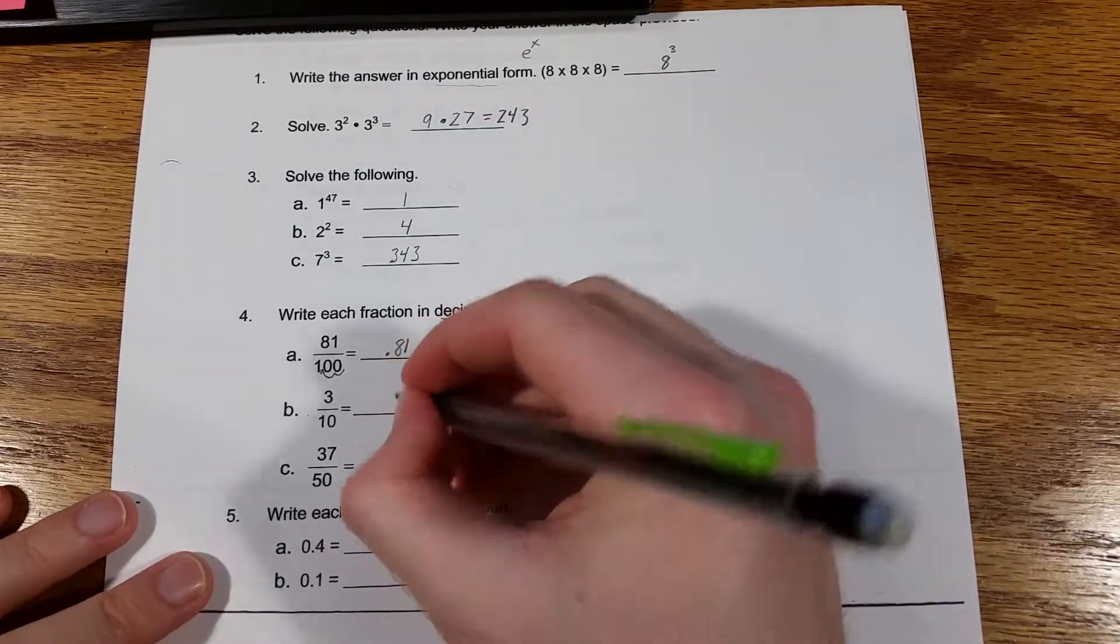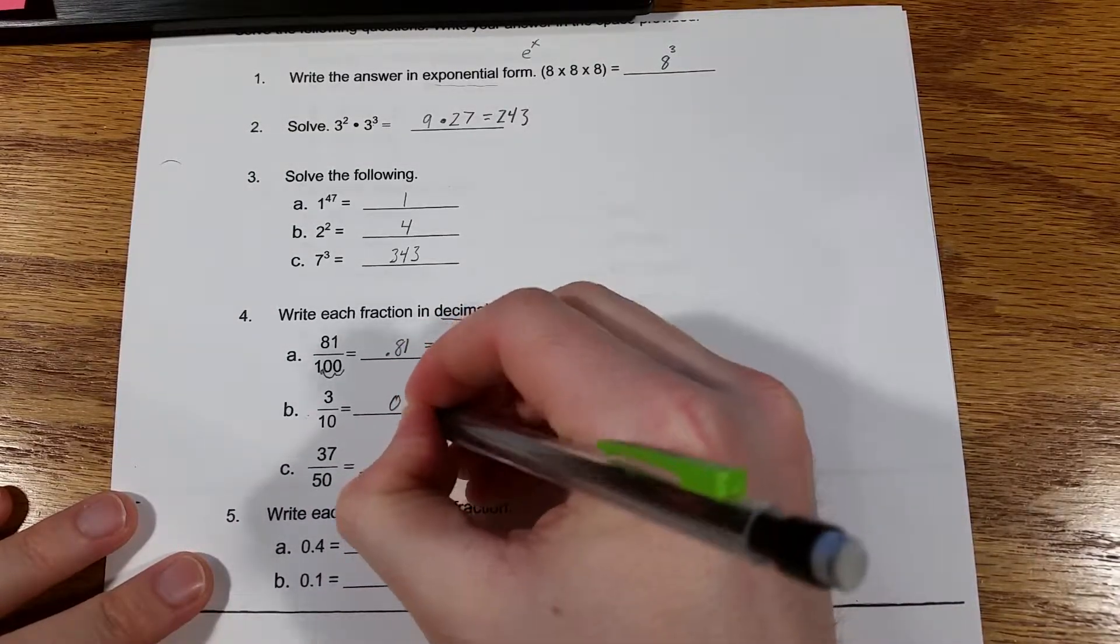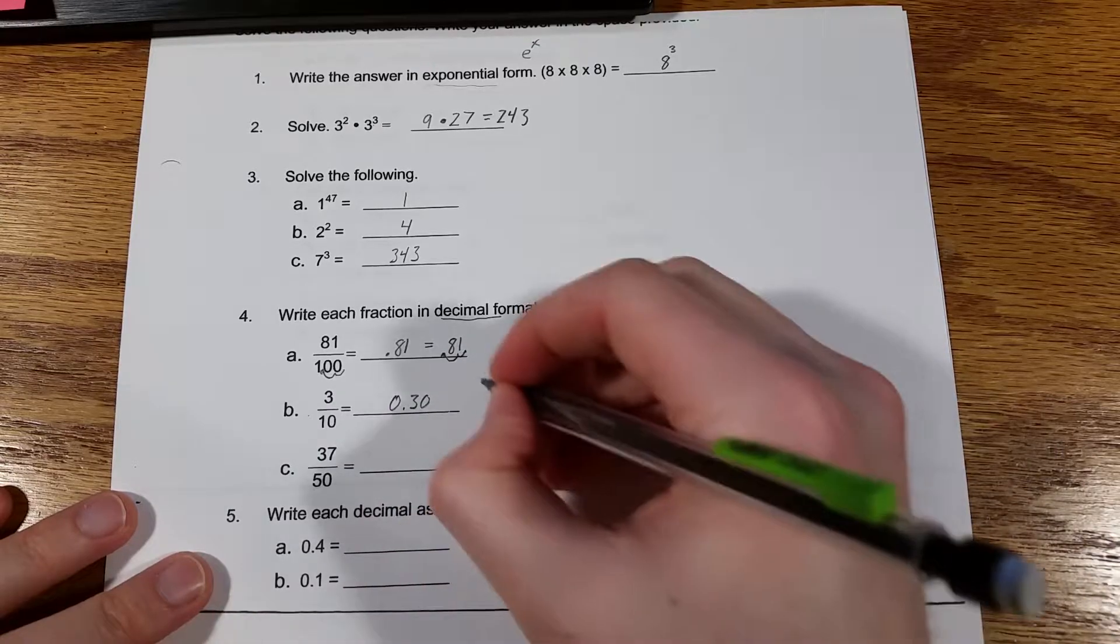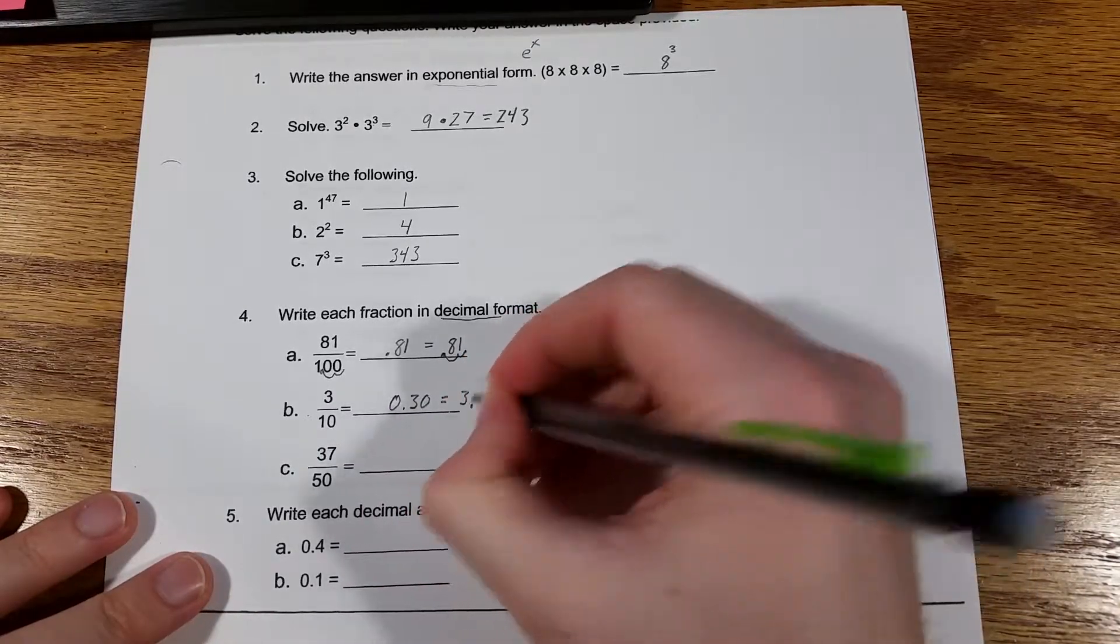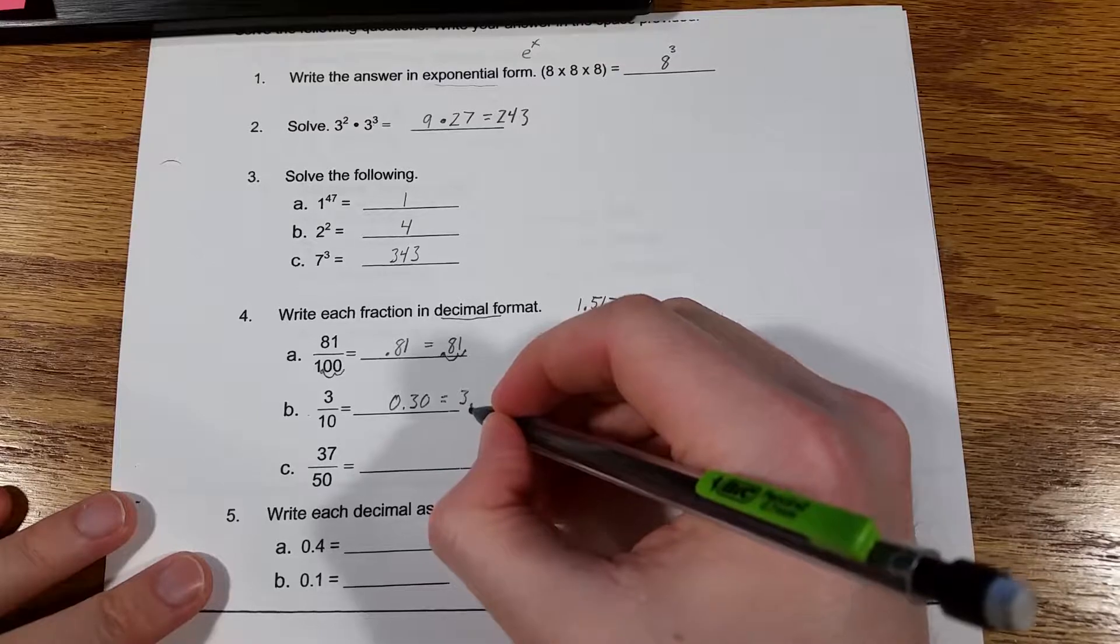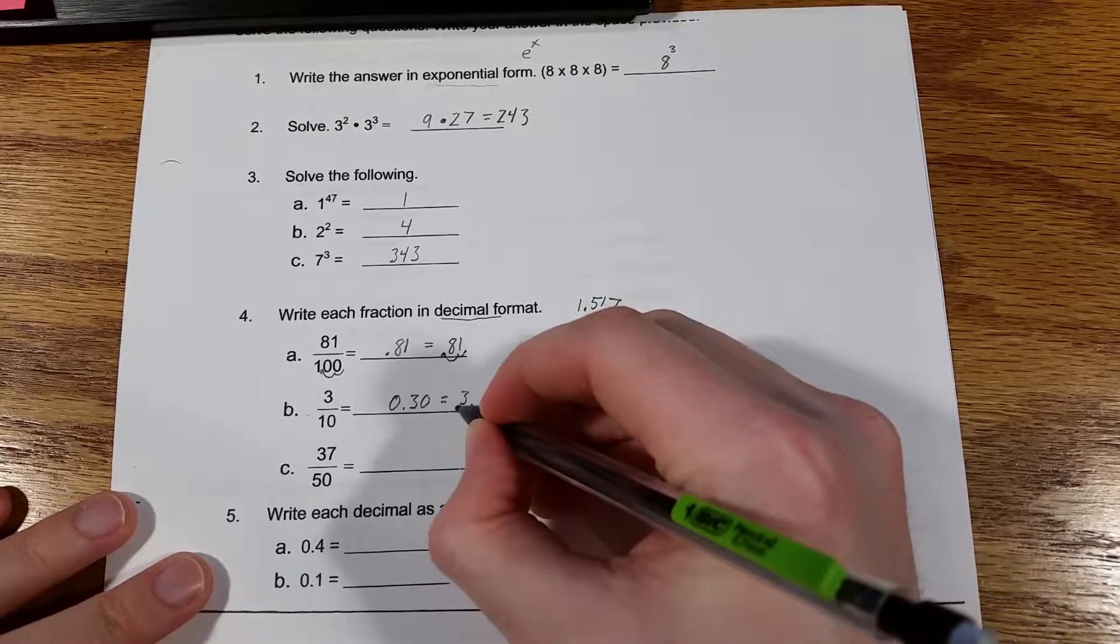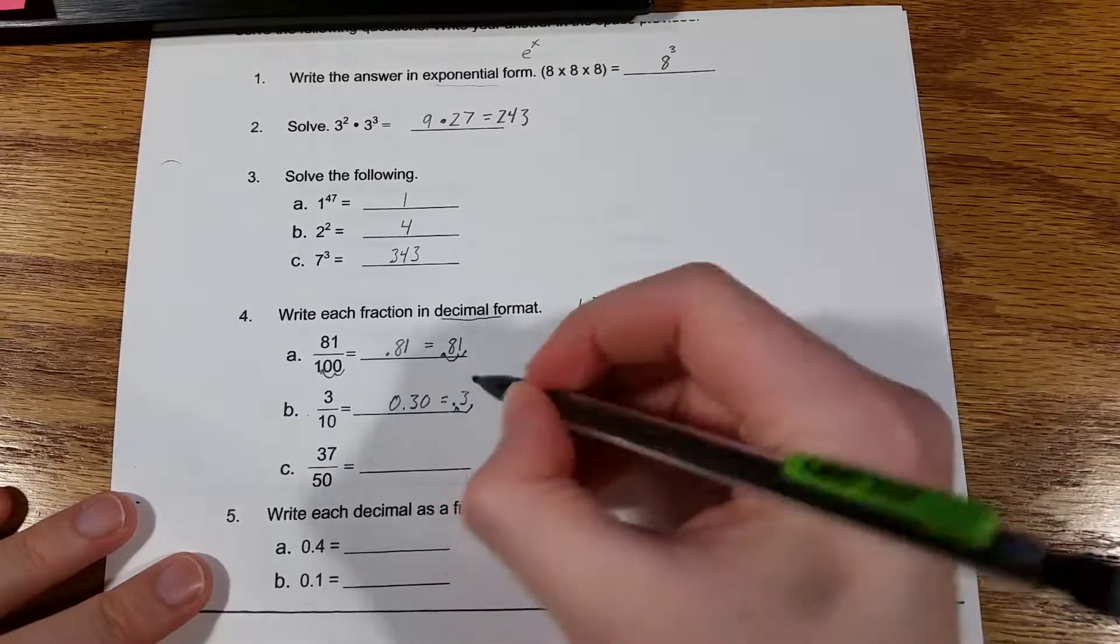3 divided by 10, that's a simple one, 0.3. Again, if you start it out with 3, you have a decimal point right here. You would just move it over one, so it would be 0.3.